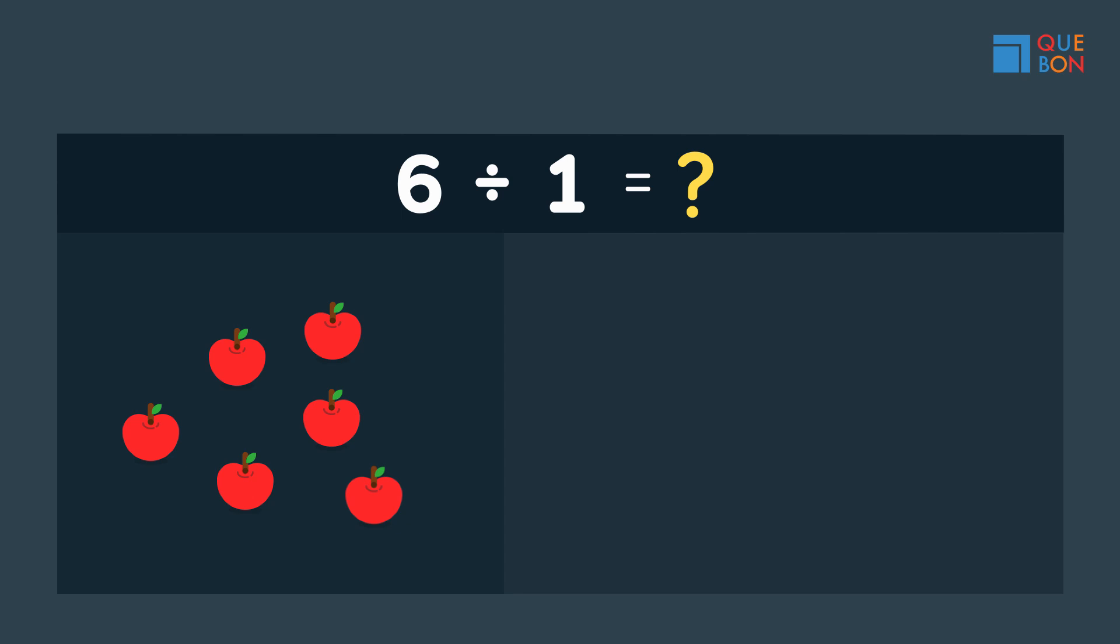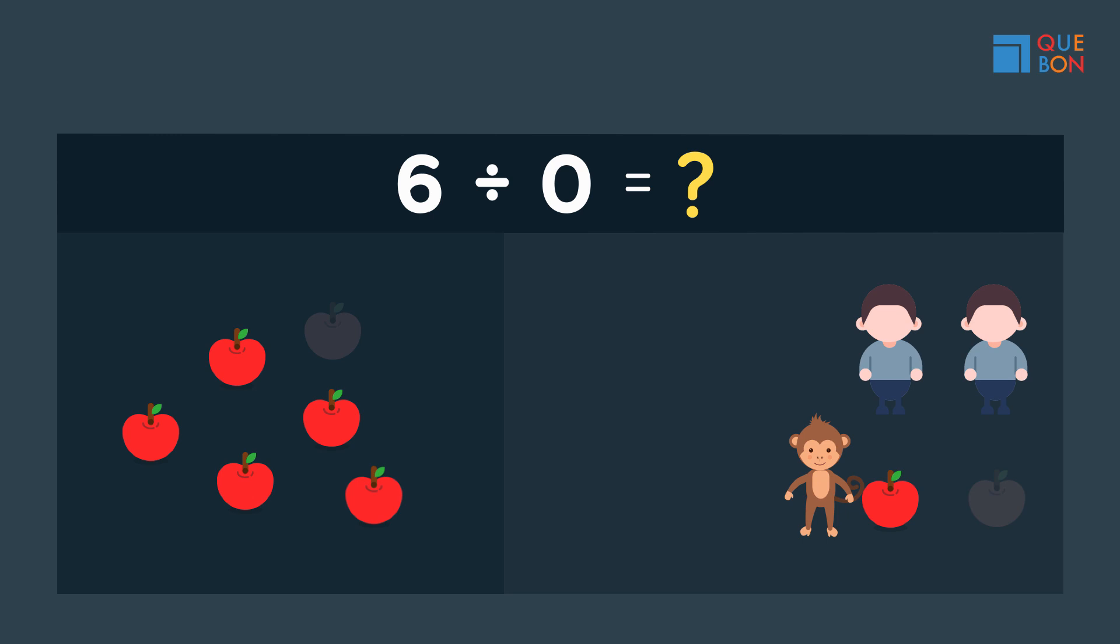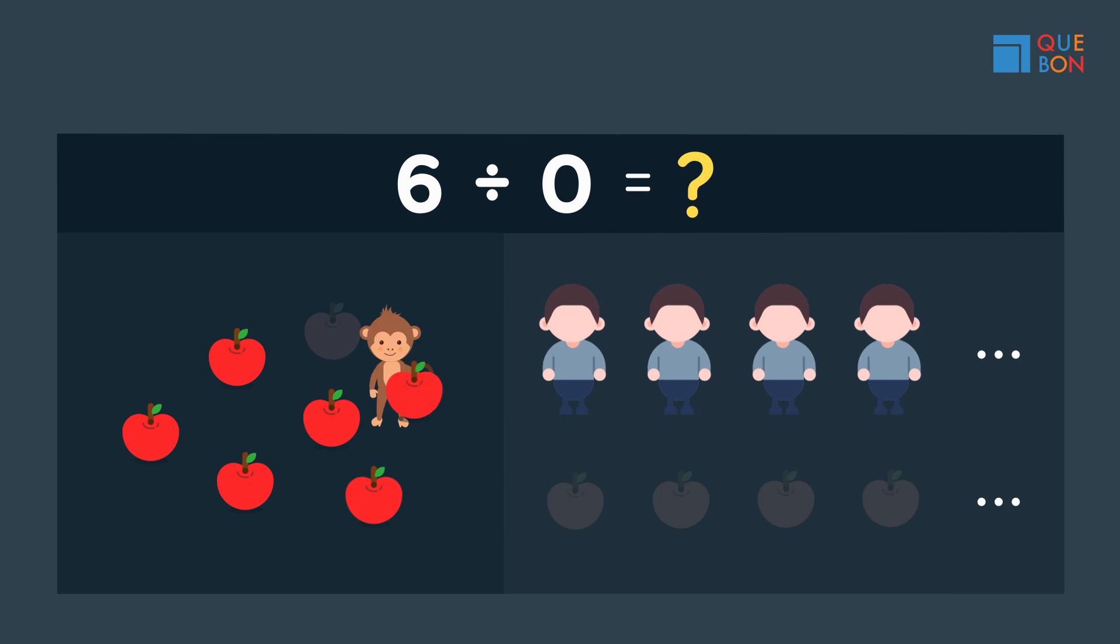Now, let's divide six by zero. Look, a monkey! I think it came to distribute some apples. How nice! It attempts to give one apple, but brings it back because it's told to share zero apples. The monkey just shared zero apples to one person. The monkey repeats this process to another person. Again and again, the monkey goes sharing zero apples to each person.